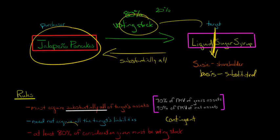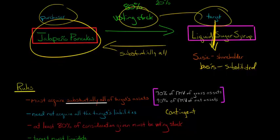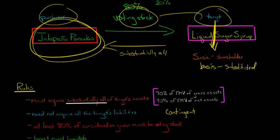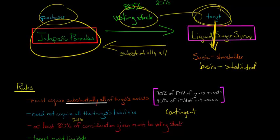At least 80% of the consideration being given by the purchaser to the target has to be voting stock of Jalapeno Pancakes. It will actually need to be higher than 80% if the target is transferring liabilities to Jalapeno Pancakes — that's going to reduce the 20% that could be boot, down and down and eventually to zero. And if the liabilities actually exceed 20% of the consideration, then it has to be completely voting stock that Jalapeno Pancakes is giving to the target.